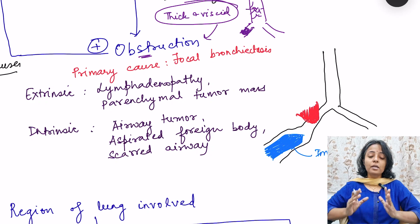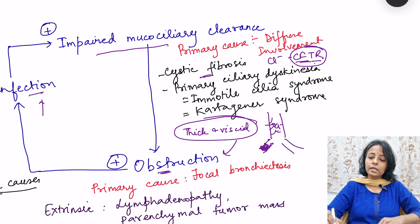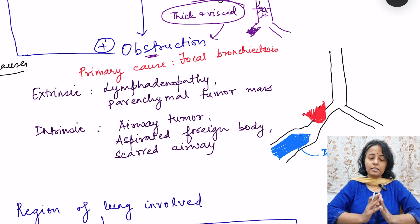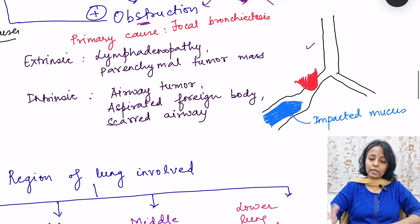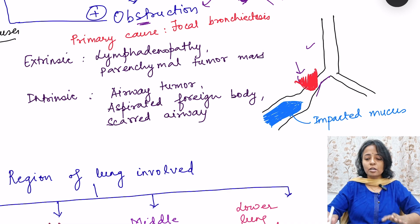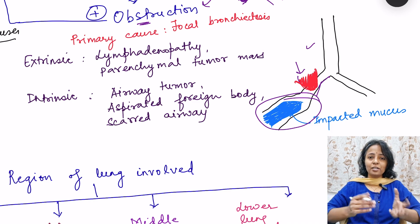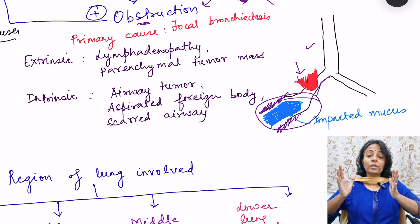The second cause is obstruction. If obstruction is the primary cause, then generally this bronchiectasis is limited to a local area — diffuse involvement of many lobes does not occur. When there is local obstruction, bronchiectasis develops only in that particular area. There can be extrinsic or intrinsic obstruction. This diagram shows extrinsic obstruction, where something outside the airway has obstructed it. The mucus is not being cleared, leading to obstruction, infection, inflammation, and ultimately destruction of smooth muscle and elastic tissue causing airway dilation.